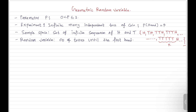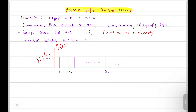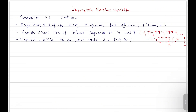Now let me define the random variable for this experiment. We have understood the experiment and its sample space — all these elements will be input to the random variable. We need to understand how the random variable maps these outcomes. We define the random variable X as the number of tosses until the first hit.